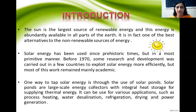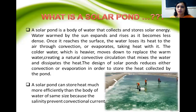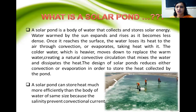A solar pond is a body of water that can collect and store solar energy. It warms the water inside, raising the temperature. In a natural pond, warm water from the bottom rises to the upper surface because it is lighter in weight, and heat is lost through evaporation. Colder, heavier water then moves from the upper surface to the lower surface, replacing the warm water.